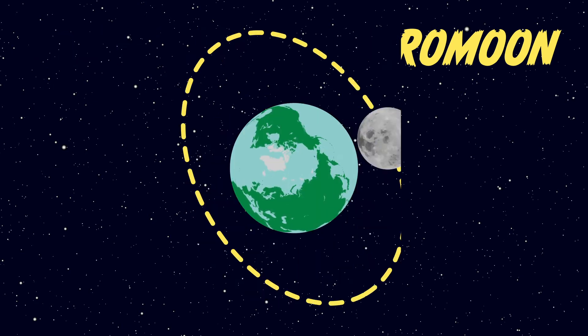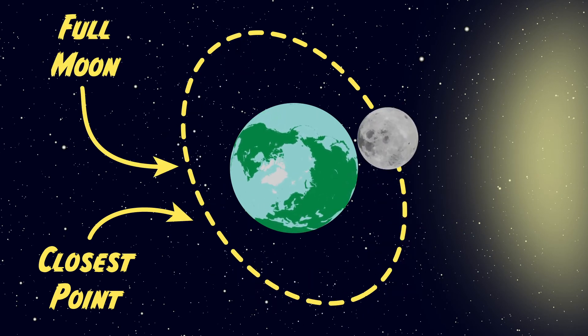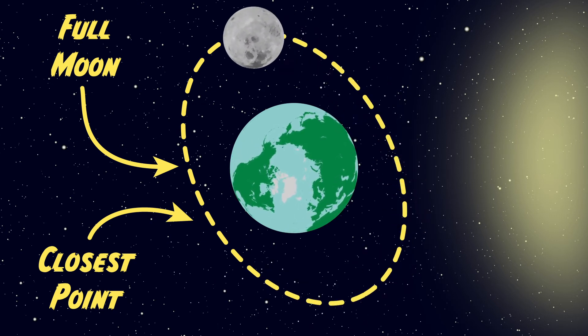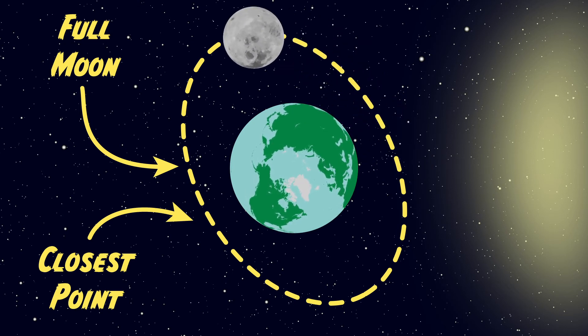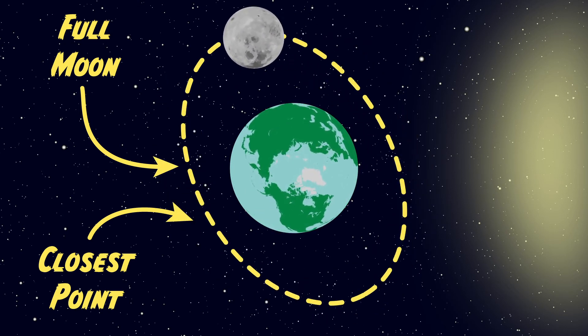Sometimes the perigee, or the moon's closest point, falls a couple of days before or after the full moon. That means that this particular supermoon will be slightly smaller than its maximum possible size. It also means that we often get two or even three supermoons in a row because these moons are all close to, but not exactly on, the perigee.